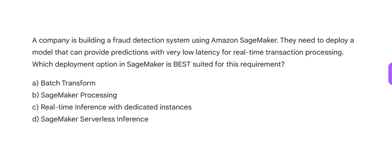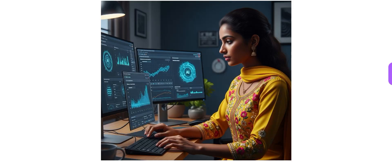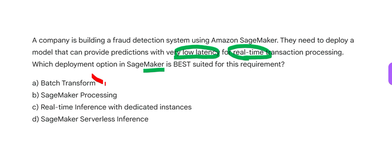The model will provide predictions, and you want these predictions to happen very fast — very low latency, extremely fast — for real-time transaction processing. Which deployment option should you use? The batch option never works when the question is about real time. You use batch transform only if you want to run it on large offline datasets — otherwise batch transform will not work.